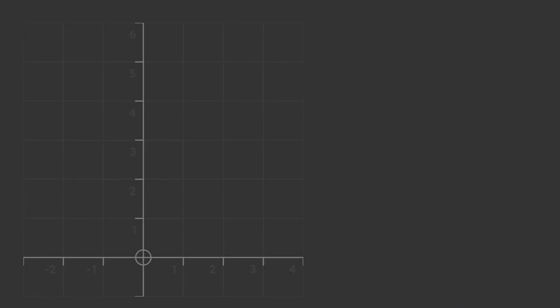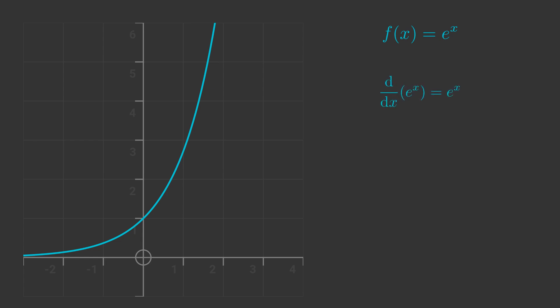The exponential function e to the x is a special case of the general exponential function a to the x. The base e is Euler's number. A defining characteristic of the exponential function is that for any value of x, the slope of the curve at x is equal to the value of the curve at x. In other words, d by dx of e to the x is e to the x.